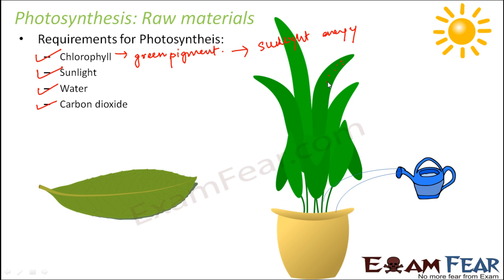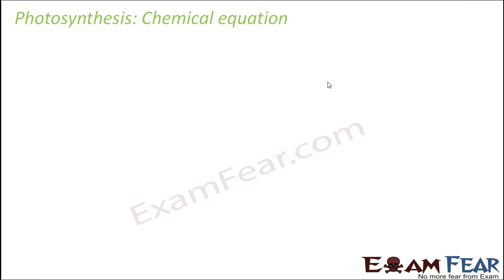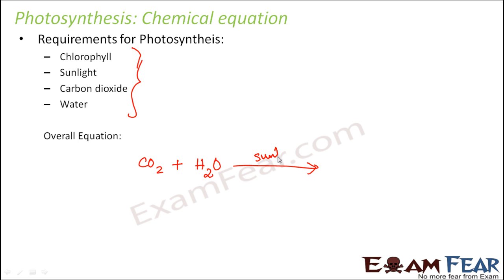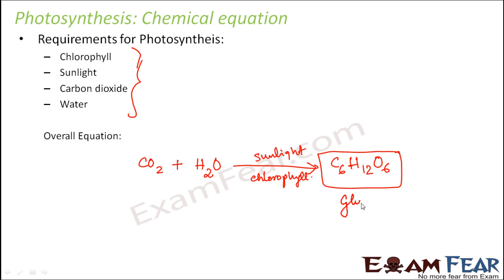Once all these raw materials are present, the process of photosynthesis happens. Overall, carbon dioxide combines with water in the presence of sunlight. Chlorophyll is also essential because it helps absorb the energy stored in sunlight, and that energy enables the reaction to take place. Carbon dioxide combines with water to form C6H12O6 — glucose — and along with this, oxygen and energy are also released.